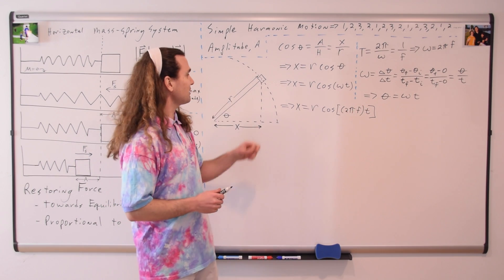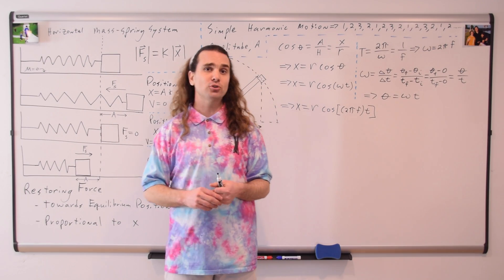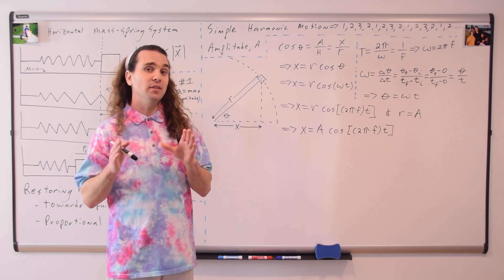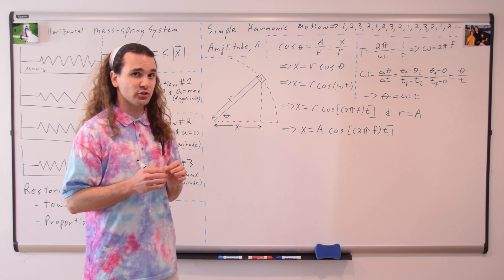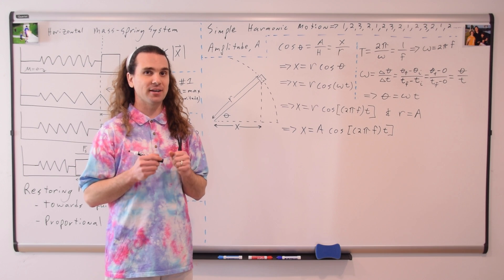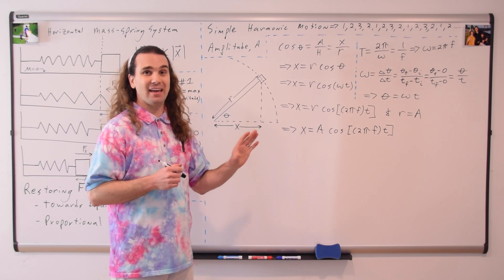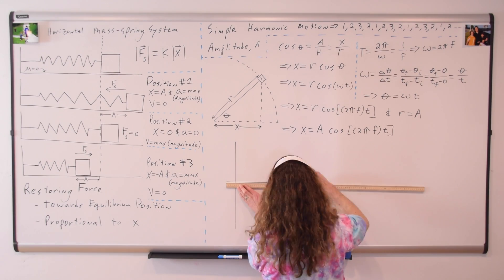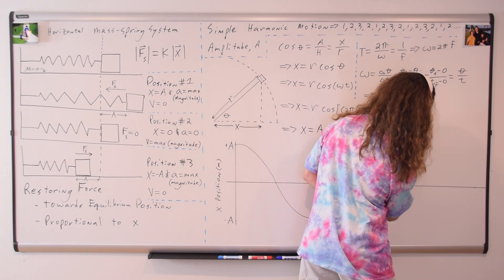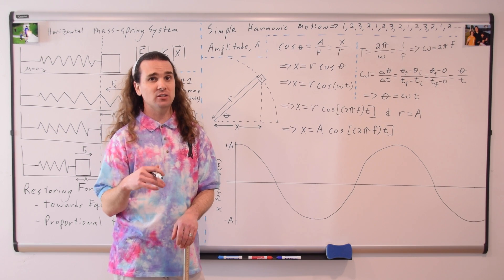And if we set the radius of the circle equal to the amplitude in simple harmonic motion, we get the equation on your equation sheet for the x-position of an object in simple harmonic motion. Let's now look at this in terms of a graph.